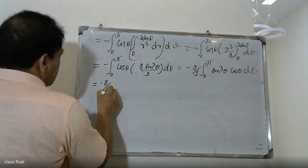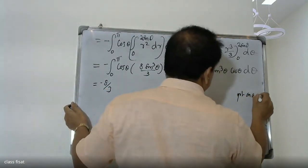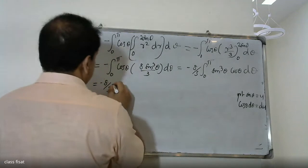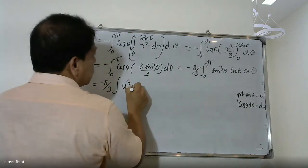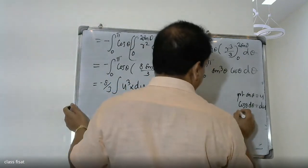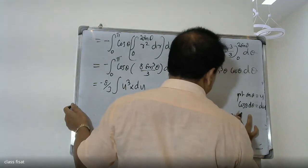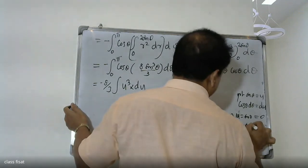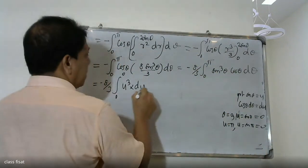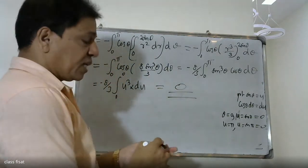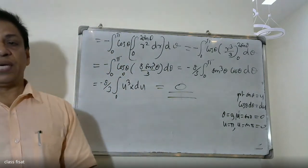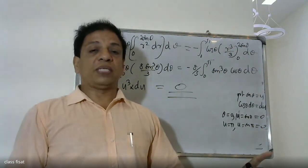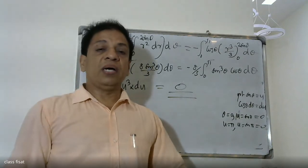This equals minus 8/3 times the integral. Using substitution u = sinθ, the limits go from u = 0 to u = 0 (since sin(0) = sin(π) = 0), so the integral evaluates to 0. Therefore the flux is 0. The final answer is 0.